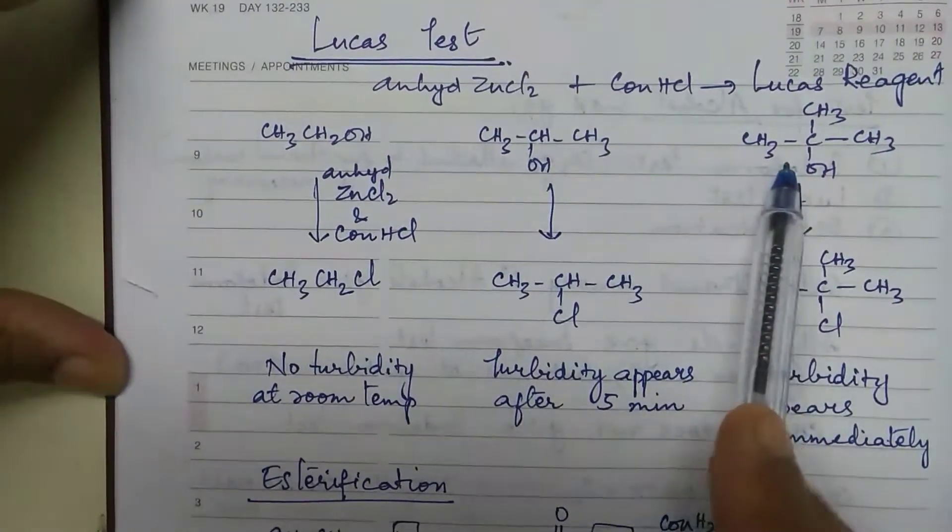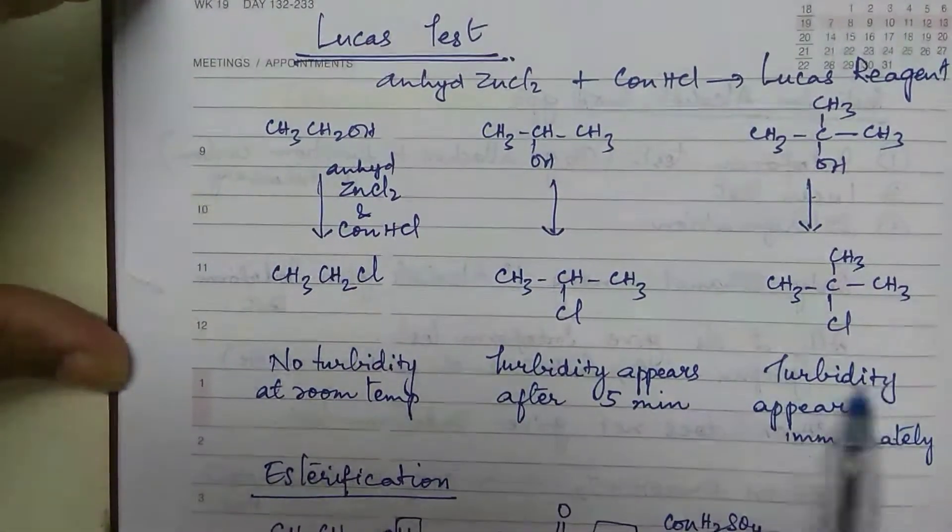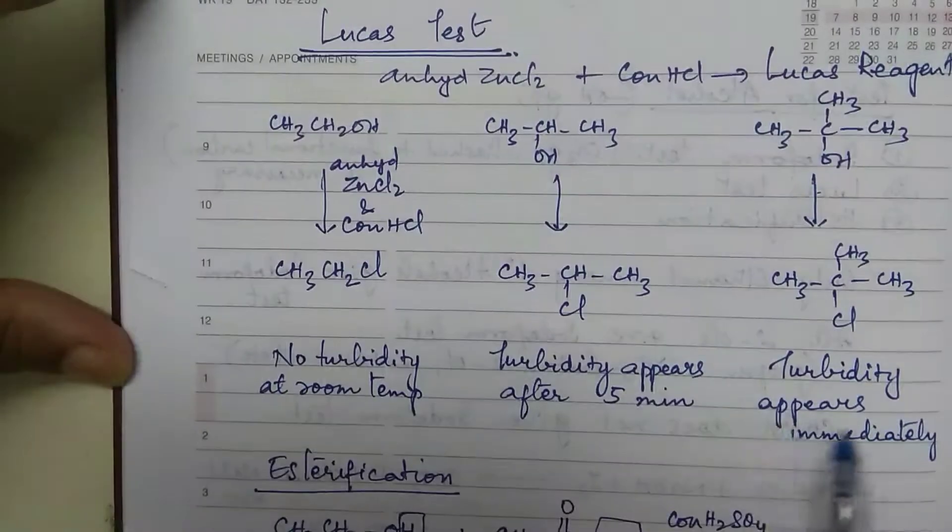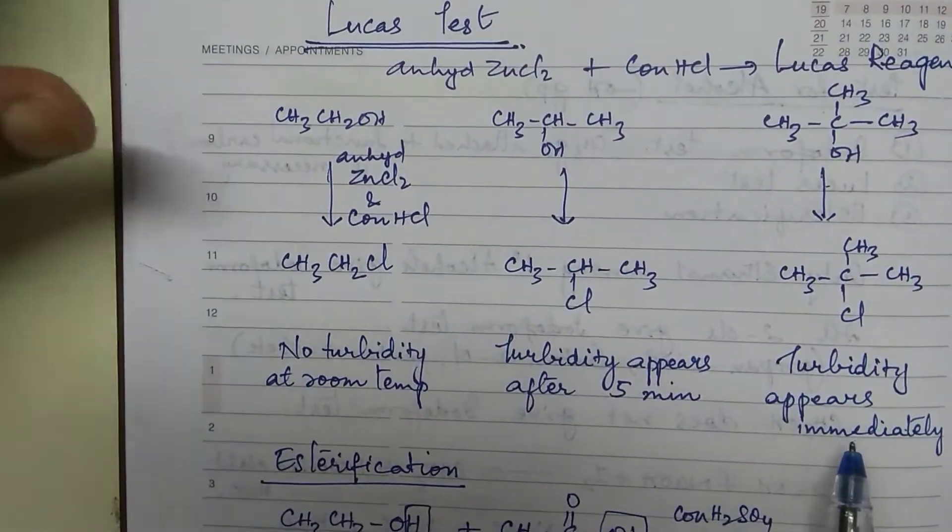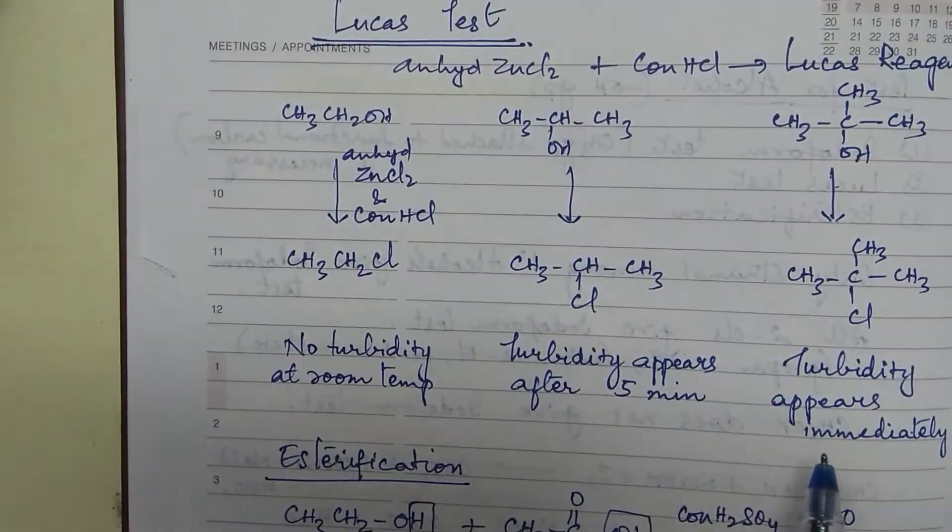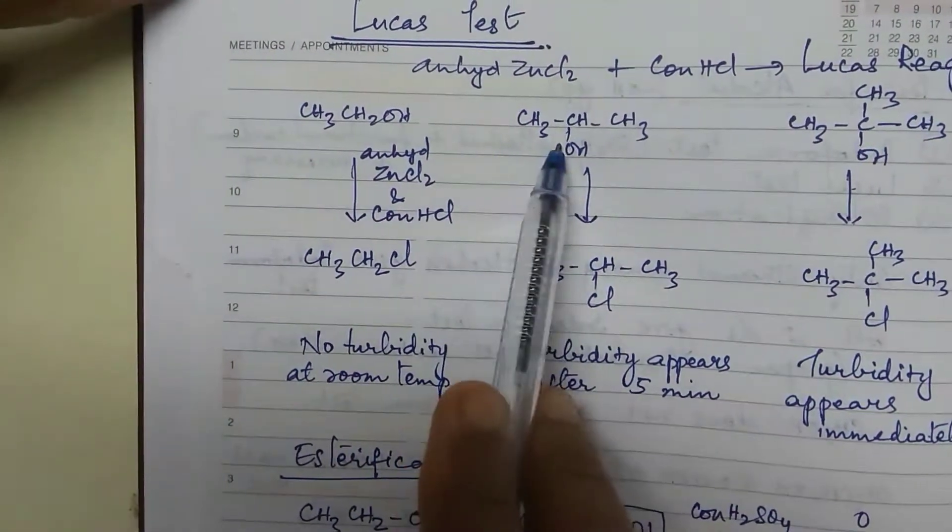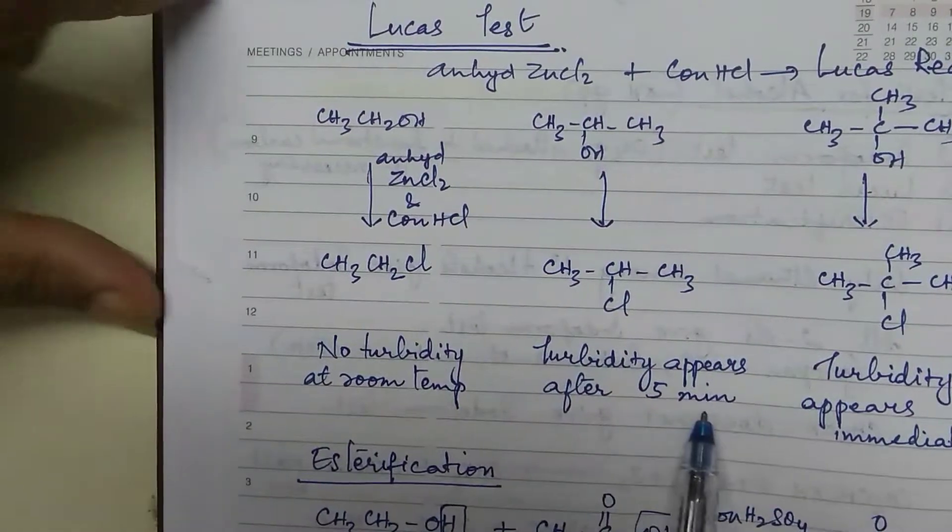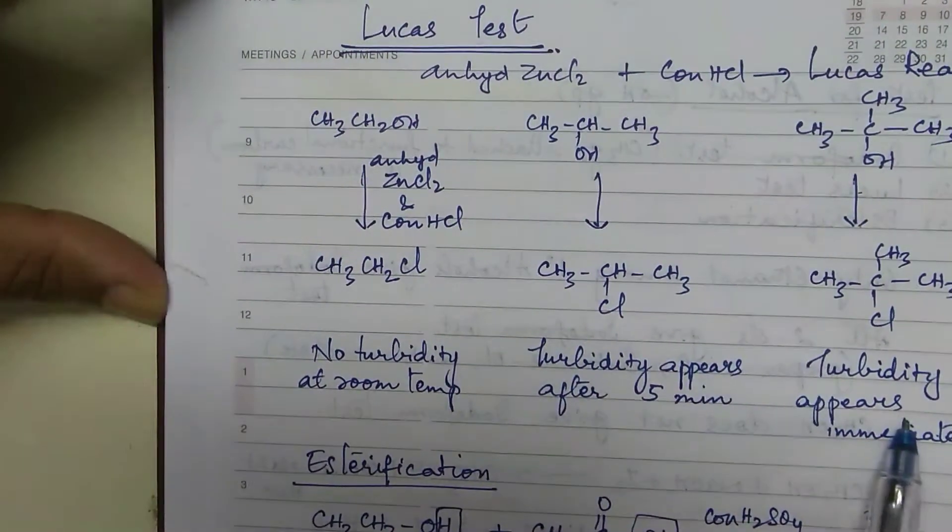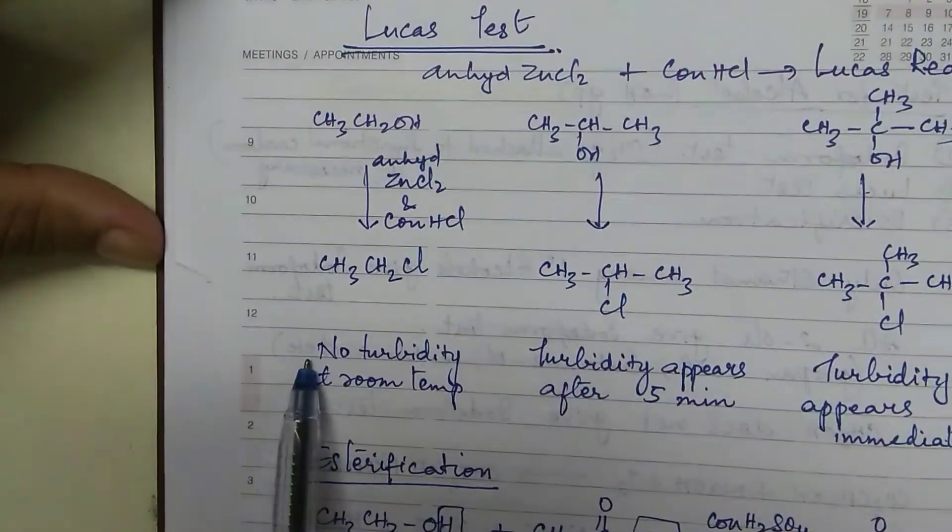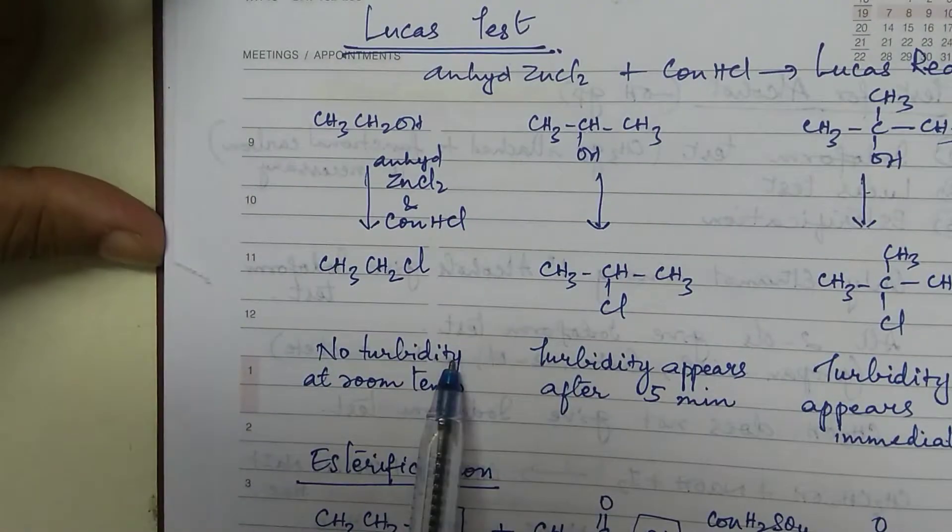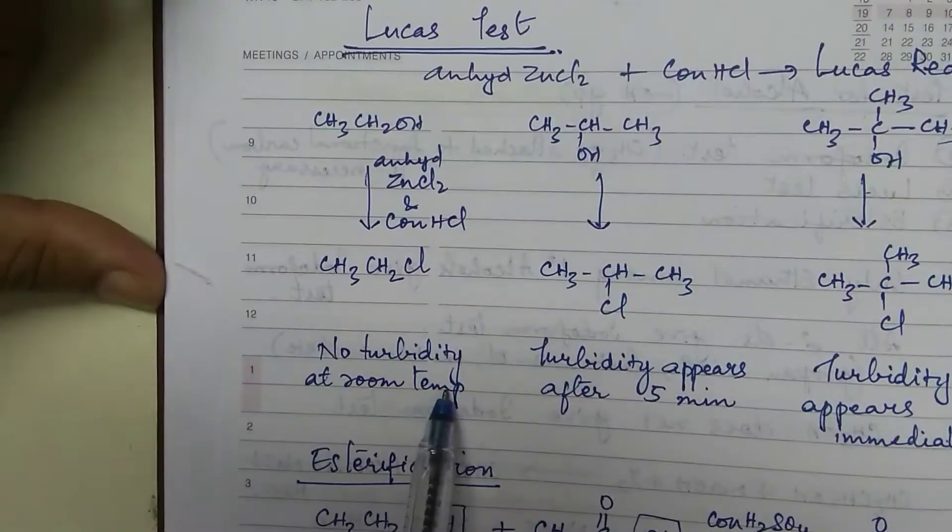Now in the tertiary alcohol, you will get turbidity immediately. Turbidity means what? Cloudiness. There is cloudiness in the test tube. That is called as turbidity. And in the case of secondary alcohol, turbidity appears but after 5 minutes. Here it appears immediately. Then in the case of primary alcohol, no turbidity appears at room temperature but it appears on heating.